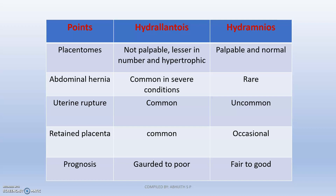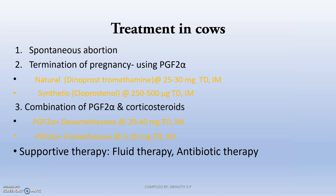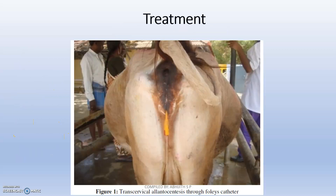Treatment in cows involves termination of pregnancy using PGF2-alpha — either natural or synthetic (cloprostenol) — or a combination of PGF2-alpha and corticosteroids. Supporting therapy including fluid therapy and antibiotic therapy is essential because the chance of metritis and septicemia is very common due to bacterial invasion. A procedure called transcervical allantocentesis can also be performed using a catheter to relieve the fluid.